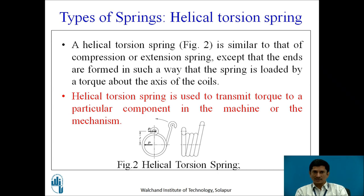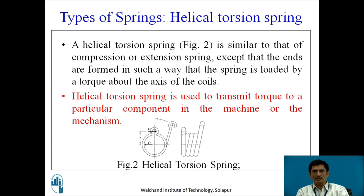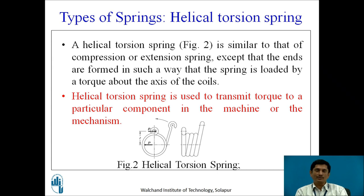Another type is the helical torsion spring. A helical torsion spring is similar to a compression or extension spring, except that its ends are formed such that the spring is loaded by a torque about its axis of the coil. It is used to transmit torque to a particular component in a machine or mechanism.